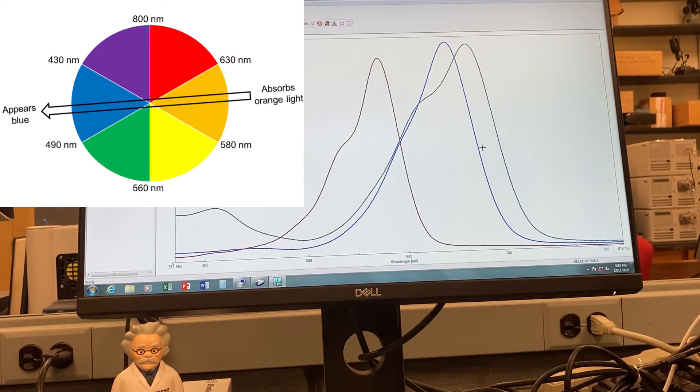If you need to review your complementary colors, go back to your art class or simply look up a visible absorption spectrum color wheel or something like that.